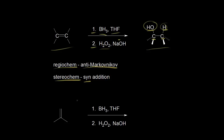Let's look at an example of a hydroboration oxidation with this alkene here. We know we're going to add an OH and an H across our double bond, and we know the OH adds to the less substituted carbon. I find my two carbons for the double bond — this carbon right here and then this one. The top carbon is obviously the less substituted carbon, so that's where we add the OH, shown here in magenta. The hydrogen adds to the bottom carbon, shown in red. So there's our product.